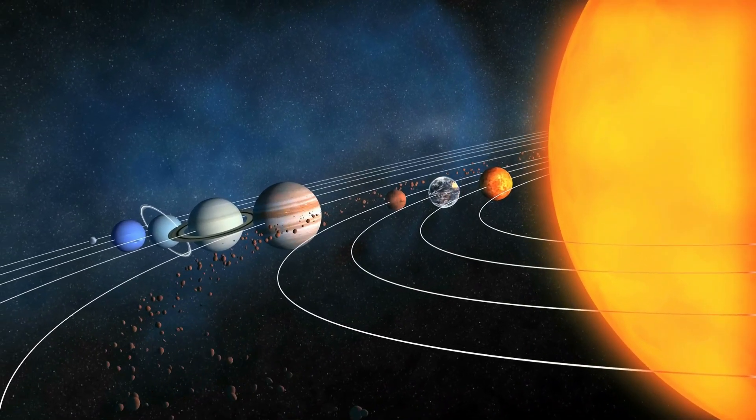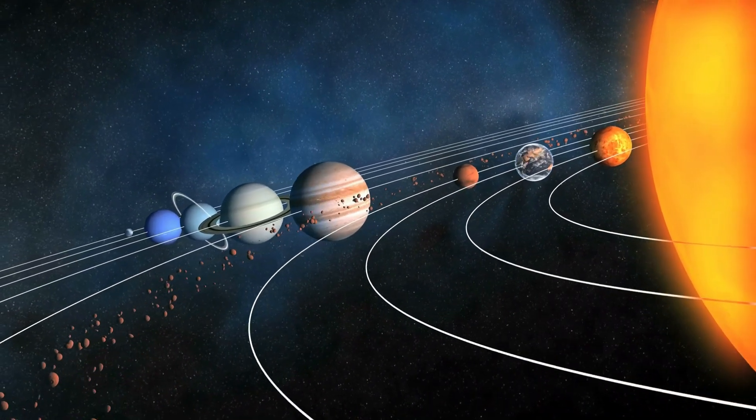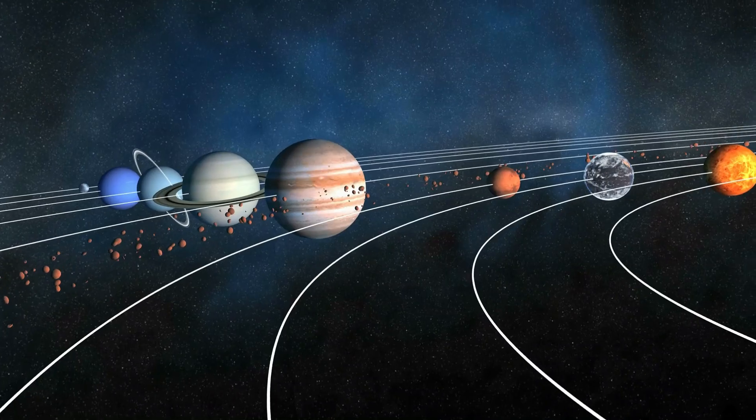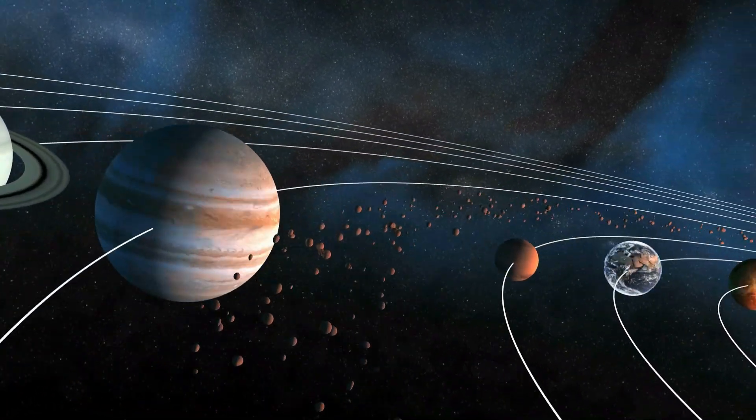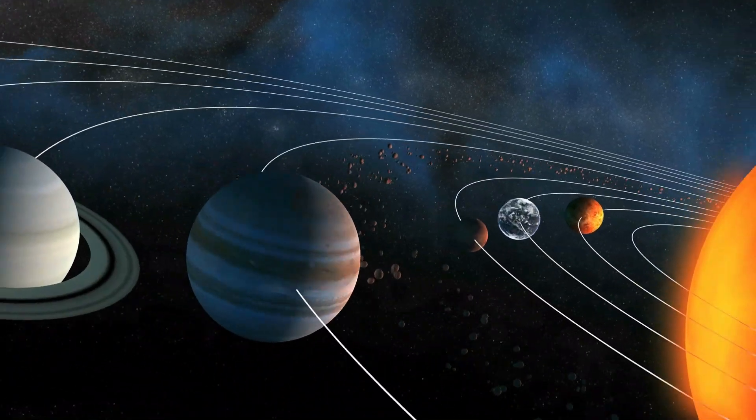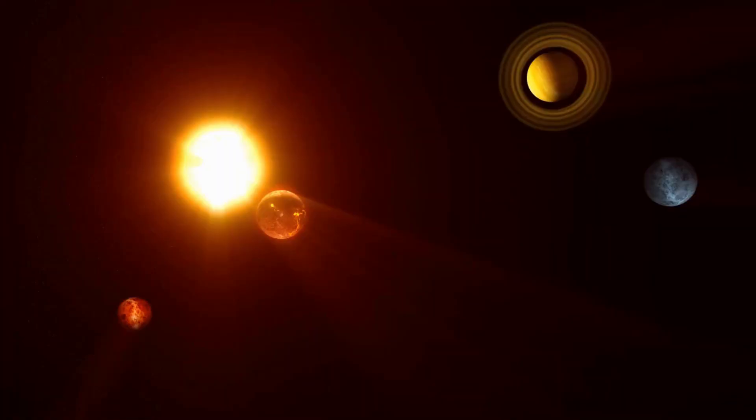While the chances of a black hole entering our solar system are extremely small, it's worth considering what would happen if a small black hole did enter our vicinity. A small black hole, even one with a mass just a few times that of our sun, could wreak havoc on our solar system.